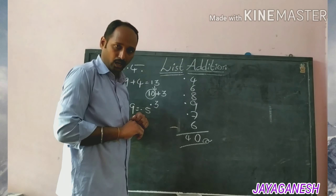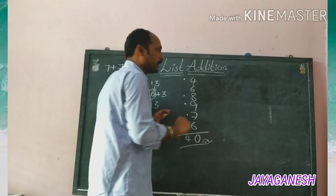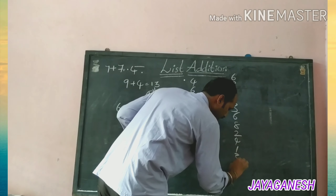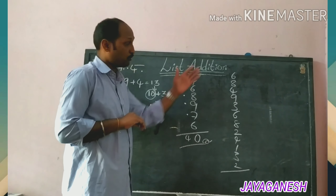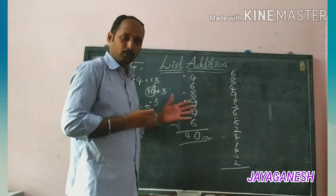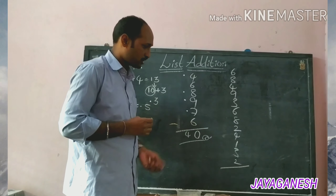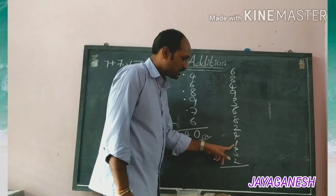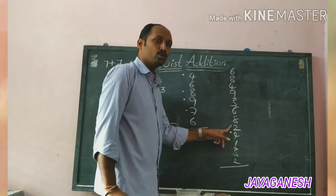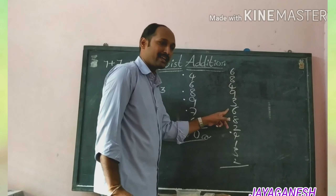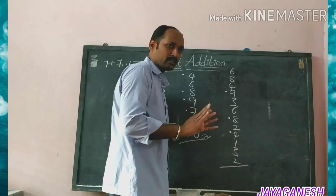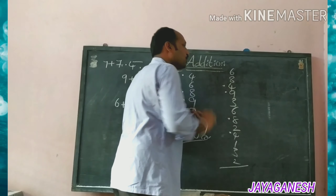See how easy that was! Let's take one more example: 6, 8, 4, 9, 3, 6, 8, 2, 4, 1, 3, 2. See how long that is — just by looking we get fear, but no need! Use the dot method. 2 plus 3 is 5, 5 plus 1 is 6, 6 plus 4 is dot 0, 0 plus 2 is 2, 2 plus 8 is dot 0, 0 plus 6 is 6, 6 plus 3 is 9, 9 plus 9 is dot 8 — don't say 18, say dot 8.